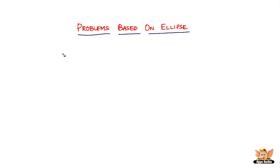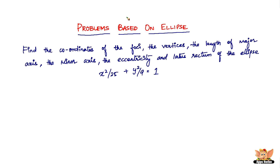In this video, let us solve problems based on ellipse. Here we've got the question which reads: find the coordinates of the foci, the vertices, the length of the major axis, the minor axis, the eccentricity, and latus rectum of the ellipse with equation x² / 25 + y² / 9 = 1.